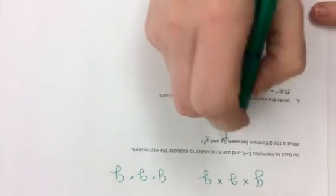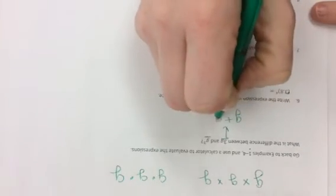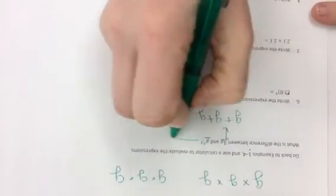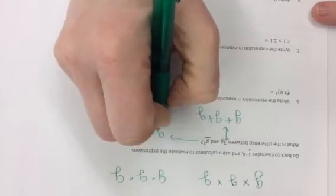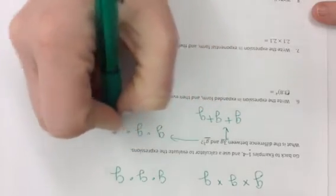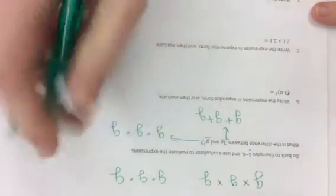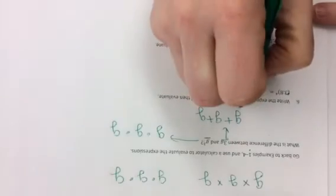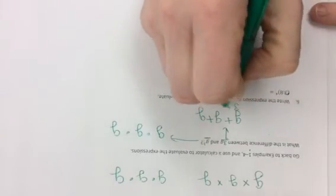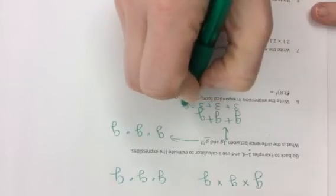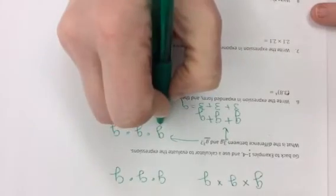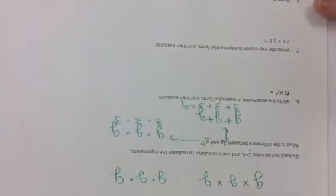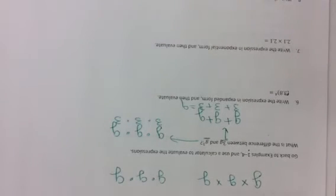Remember, 3g means g plus g plus g — that is NOT g to the third, because exponents are repeated multiplication, not addition. There is a huge difference between the two. For instance, if g equals 3: 3 plus 3 plus 3 equals 9, but 3 times 3 times 3 equals 27. Big difference — you can't make that mistake.